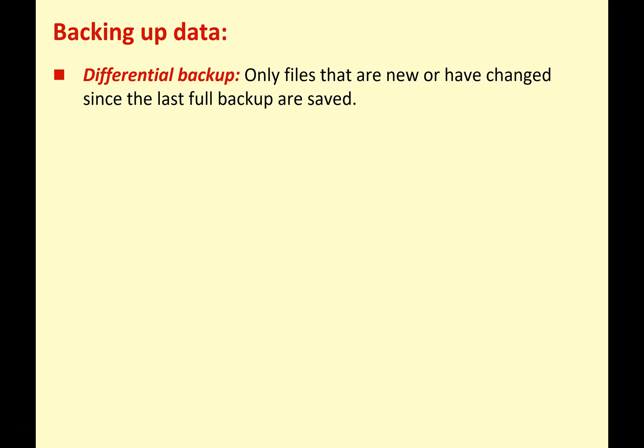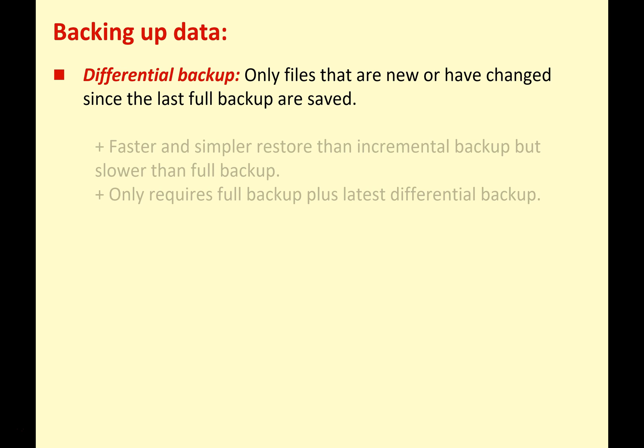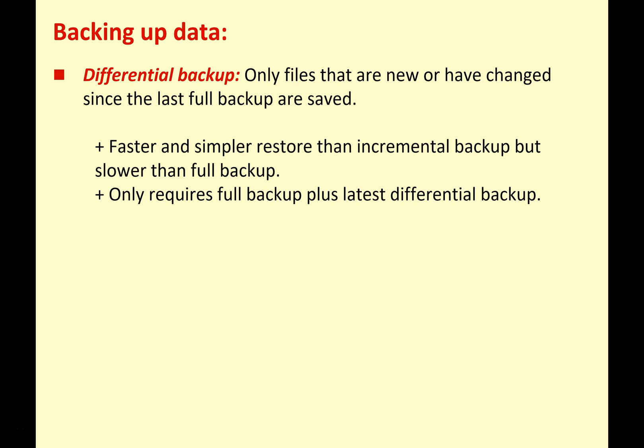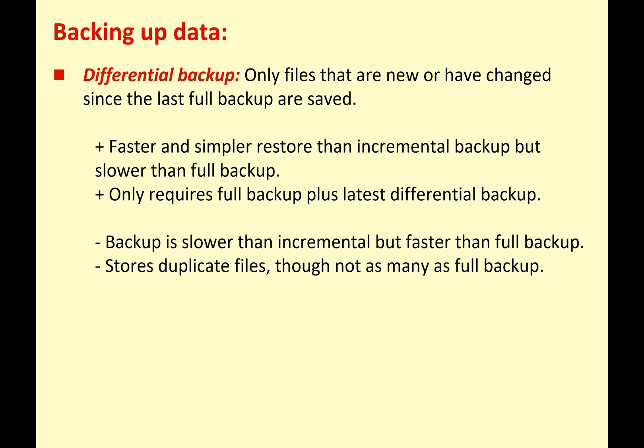Differential backup means only files that are new or have been changed since the last full backup are saved. It's faster and simpler to restore than incremental backups, but still slower than a full backup. You only require the full backup plus the latest differential backup to restore. On the negative side, it's slower than incremental — although faster than a full backup — and it does store some duplicated files, though not as many as a full backup. Make sure you can tell the difference between backup types and explain them using correct technical vocabulary for your exam.